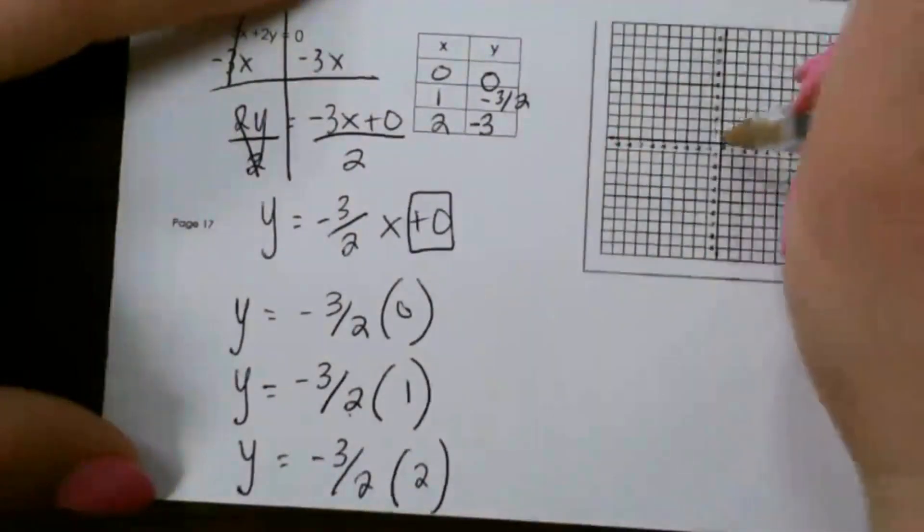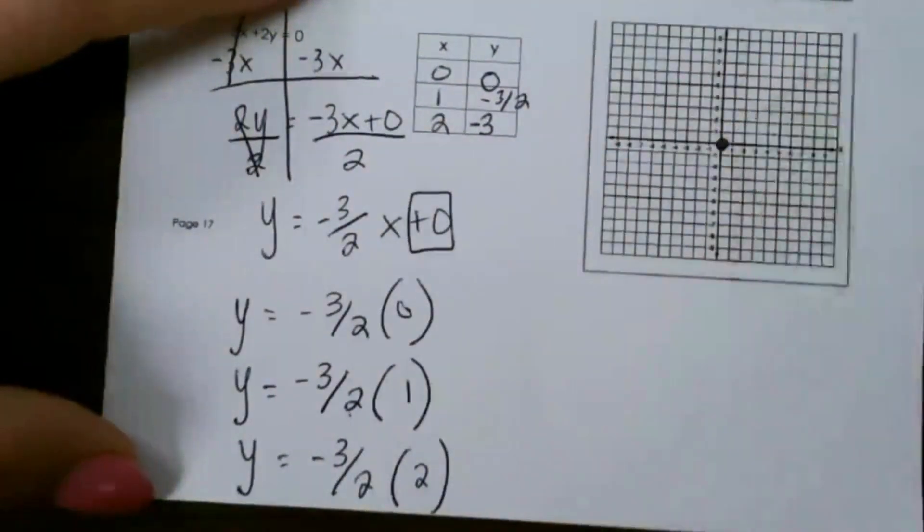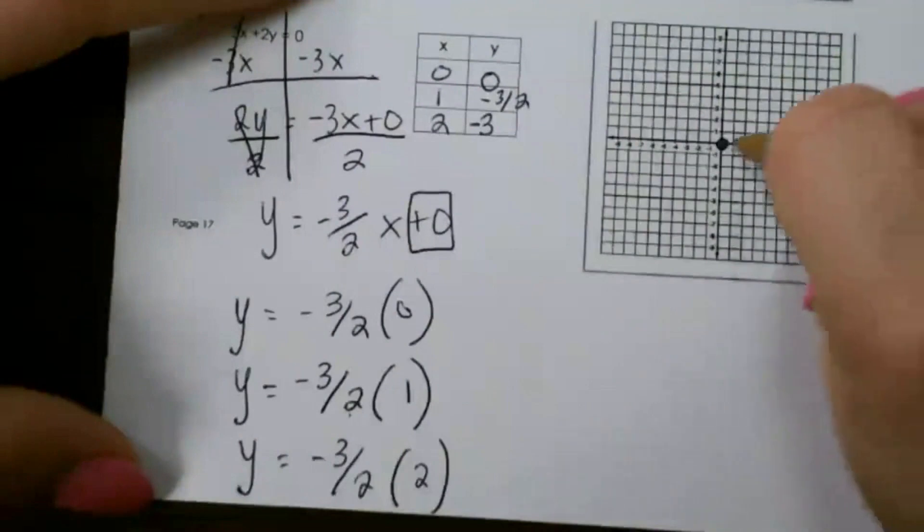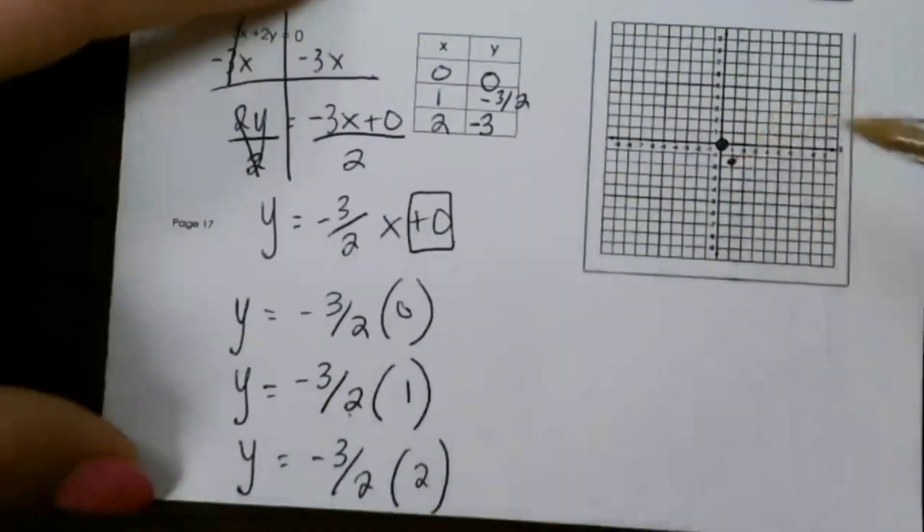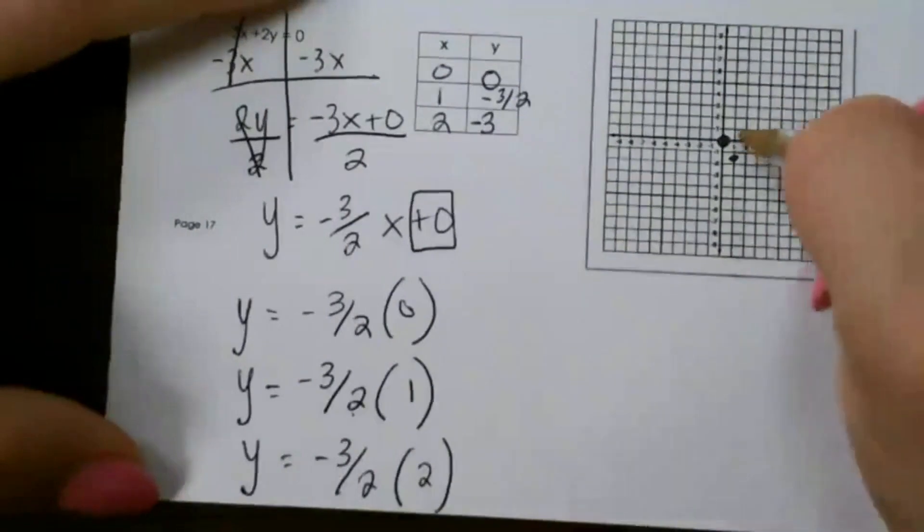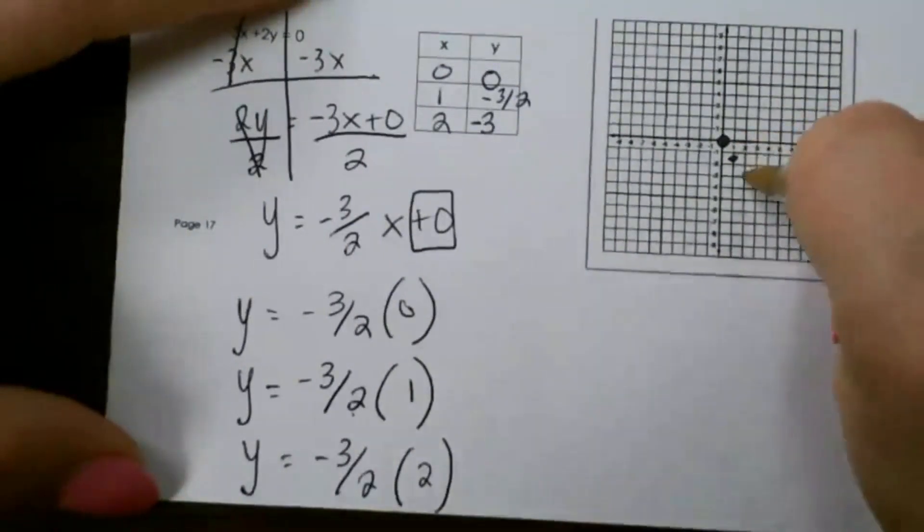So then we just put them on the graph. 0, 0. Then we have 1, negative 3 halves. So that's about between negative 1 and negative 2, and then we have 2, negative 3.